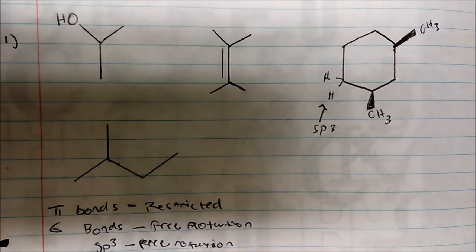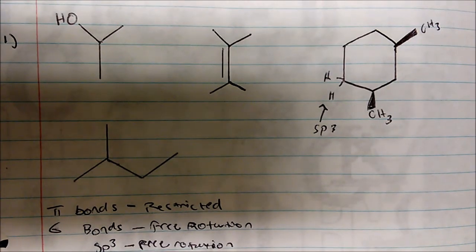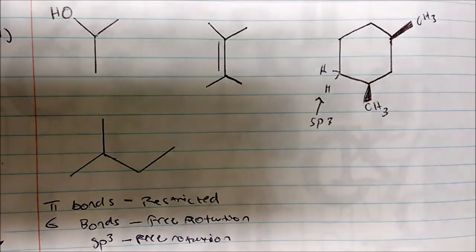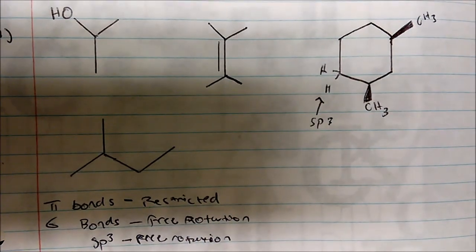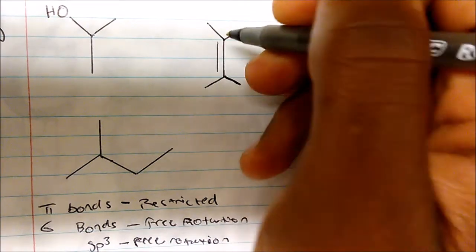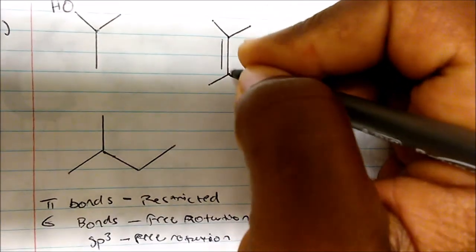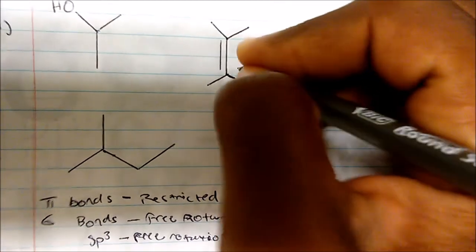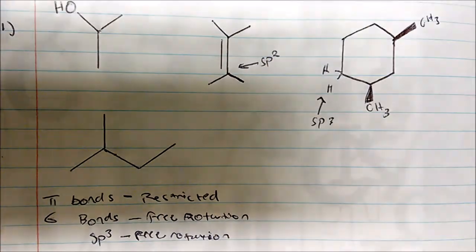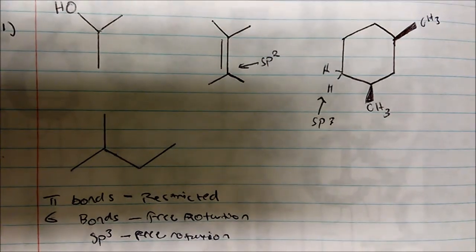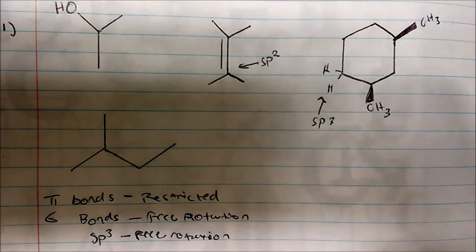What you're looking for is double bonds. So if I take a look at this compound here, what do I see? Well, I see a double bond here. I see a pi bond here. And this carbon now is sp2 hybridized. So you want to look for sp2 hybridized carbons or atoms with some sort of double bond. Double bond prevents free rotation.